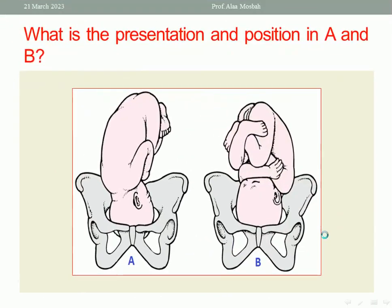Let us go to the next. What is the presentation and position in A and B? Try to answer before me. When you look at the picture, look at where the denominator is. In case of vertex, the denominator is the occiput. Where the occiput is — this is the fetal position. Because this is a vertex presentation. Why vertex presentation? Because the lowermost part of the head entering the pelvis is the vertex. Both of them: vertex presentation.